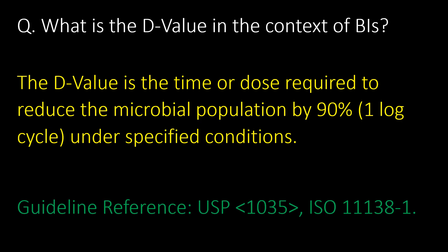What is the D-value in the context of biological indicators? The D-value is the time or dose required to reduce the microbial population by 90 percent, that is one log cycle, under specified conditions. Reference guideline: USP chapter 1035 and ISO 11138-1.